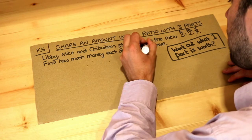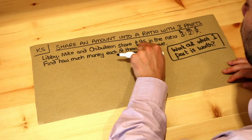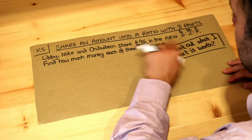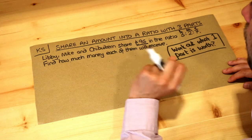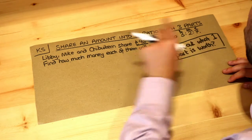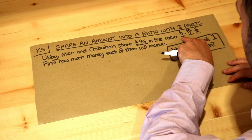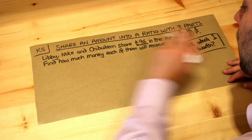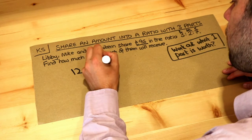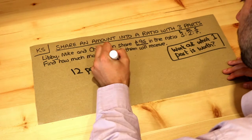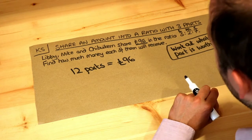Now let's think about the value given — they're sharing £96. The £96 represents the total amount they have, so we need to think about the total number of parts. Three plus two plus seven is 12, so we have 12 parts in total in the ratio, and that represents the total amount of £96.